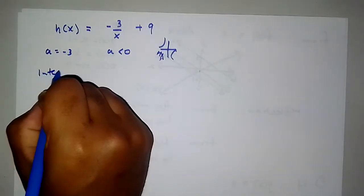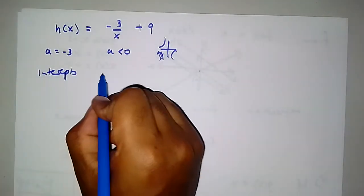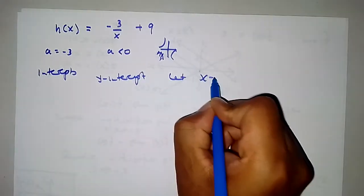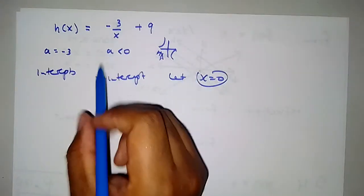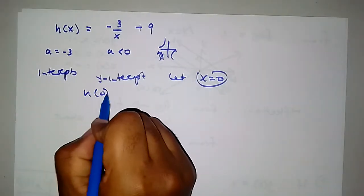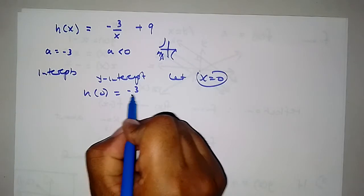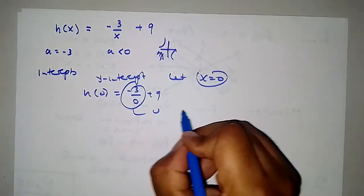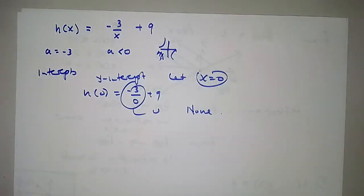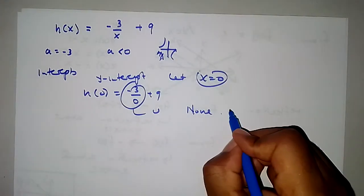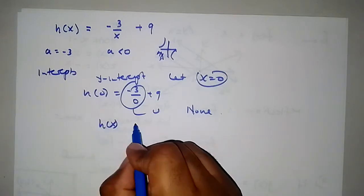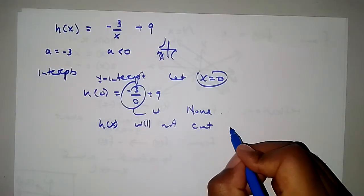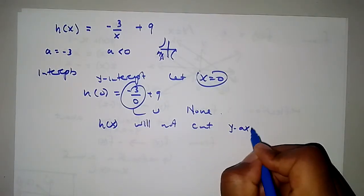For the y-intercept, we let x equal 0. However, h of 0 equals negative 3 divided by 0 plus 9, which is undefined. So the function has no y-intercept — h of x will not cut the y-axis.